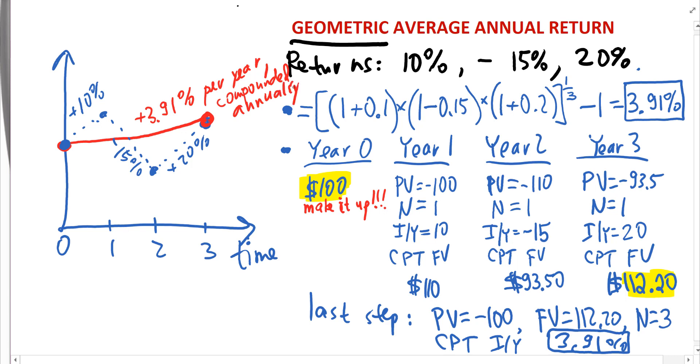And so, the way we interpret the geometric average is we would say something like this. If you invest your money for three years, you invest your money for three years, you're not saying one year, right? For three years, the entire investment period that we are given, then the money will be growing on average by 3.91% per year, comma, compounded annually.